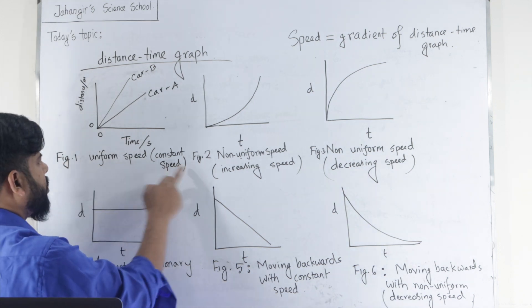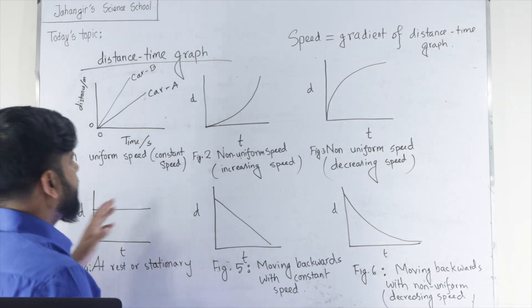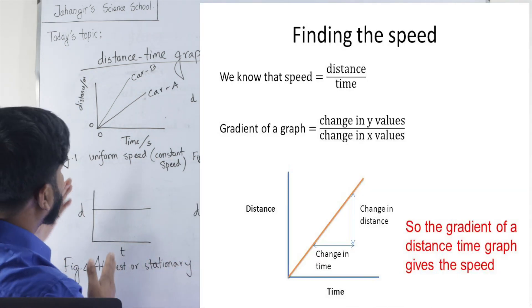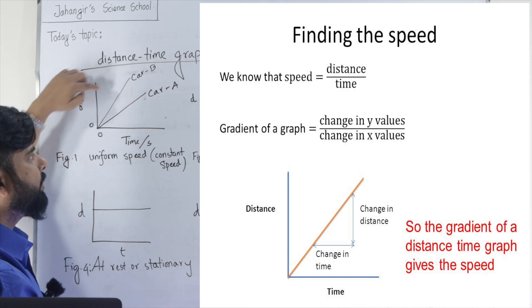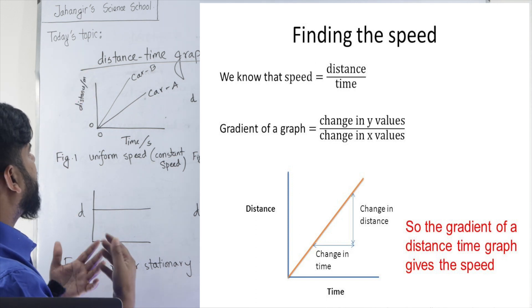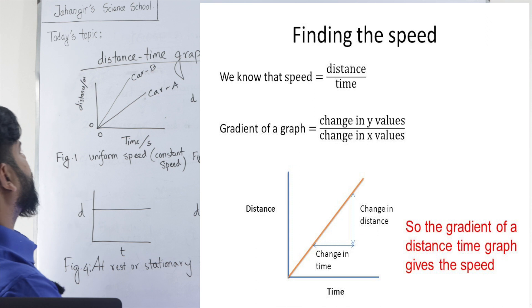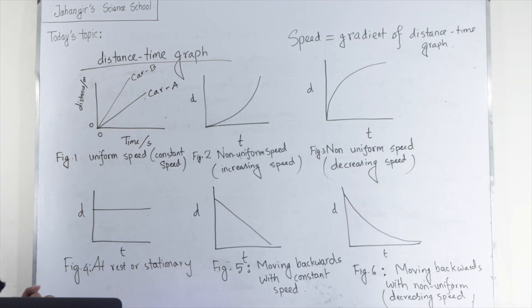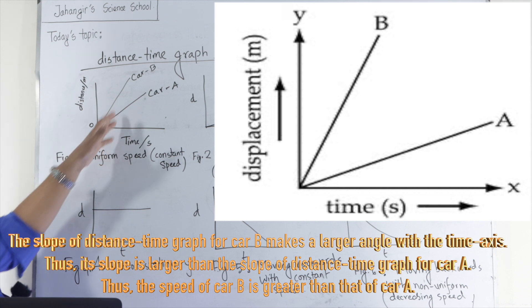So, uniform speed or constant speed. The gradient or slope of the distance time graph represents the speed of the moving object. So, there are two cars here, the distance time graph for two cars.